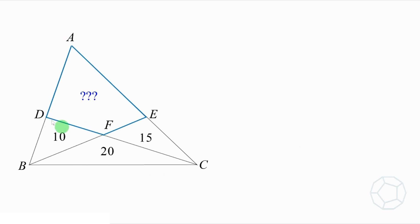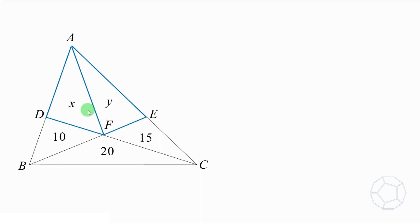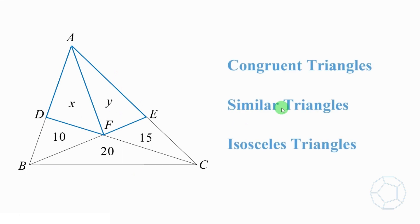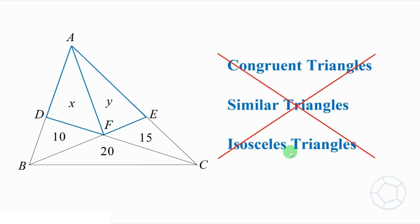First of all, this part looks different from the others. Let's draw the line AF to divide it into two triangles. The areas of the two smaller parts are X and Y. The figure is random without any congruent, similar, nor isosceles triangles.